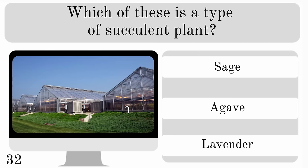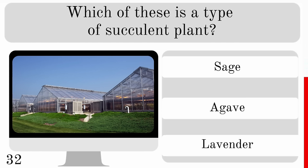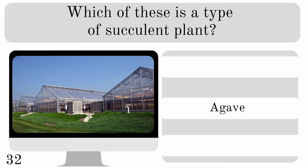Which of these is a type of succulent plant? Sage, Agave or Lavender? The correct answer is Agave.